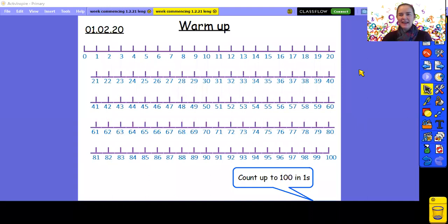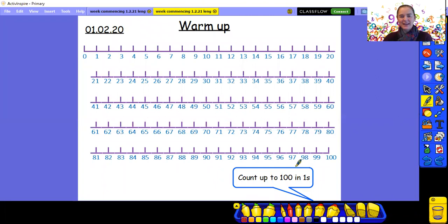We're going to start by counting in 1s from 0 all the way to 100. I've got a number line up on my screen here and we've sent you a number line. So if you would like to go and get that and have it in front of you, that will help you with your counting as we count together. Put me on pause, go and grab your number line and then come back to me. Welcome back. Let's start. I'm going to hover my pen over the numbers as we count. Are you ready?